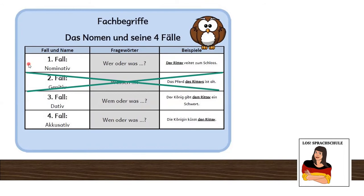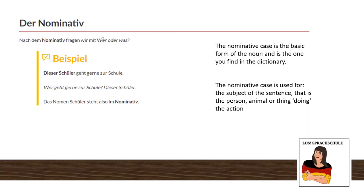So the first case is nominative. The question words, as we saw in the table and we see it here also, is 'wer oder was' — who or what. The nominative case is the basic form of the noun and it is also the one that you find in the dictionary. This means when you learn a word, you normally always learn it in nominative, if it is a noun of course. So when your teacher asks you to always learn the article with a noun, it is the article in nominative.